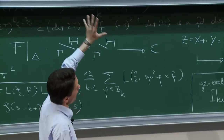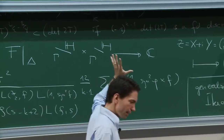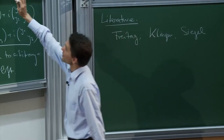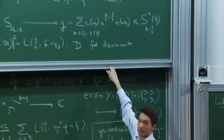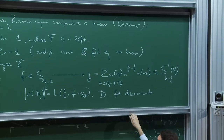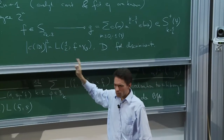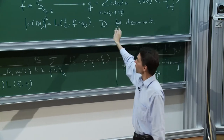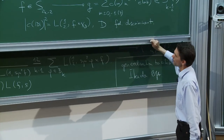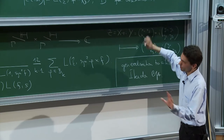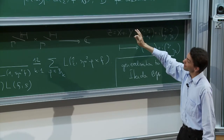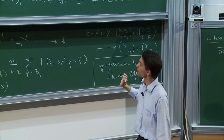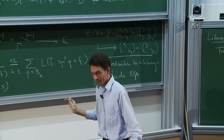Regarding Cohen-Zagier and Siegel modular forms on congruence subgroups: yes, certainly you can do this for congruence subgroups as well. The nice closed formula of Cohen-Zagier, to my knowledge, exists for the full modular group, although the general framework holds in generality. There is nothing special about the modular group except that everything is simpler.